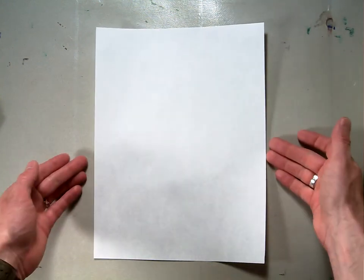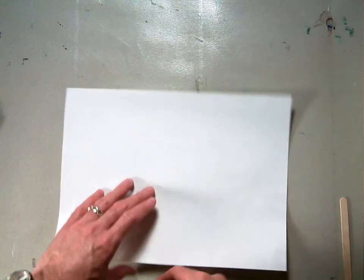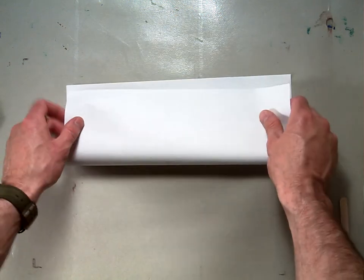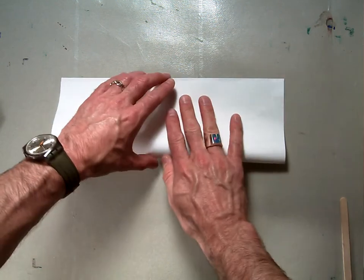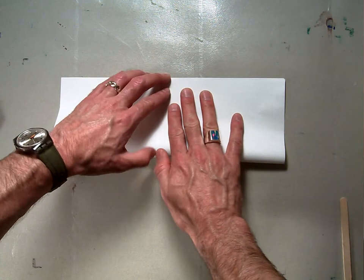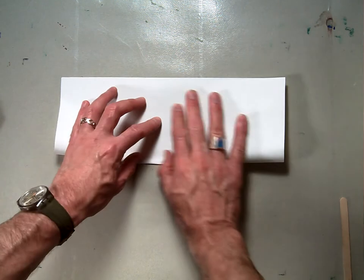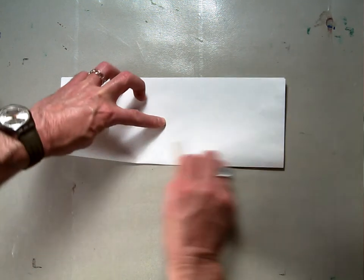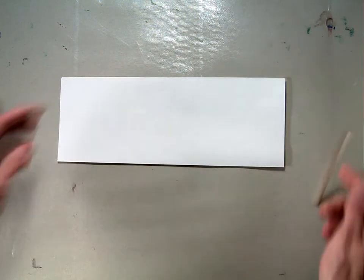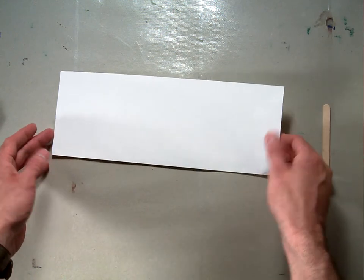So to get started you're going to want to take your paper and you're going to want to make a valley fold this direction so that you have the paper divided in half. Make sure that you bring that one edge to the other edge and have a nice strong valley fold in the center. Use your bone folder.